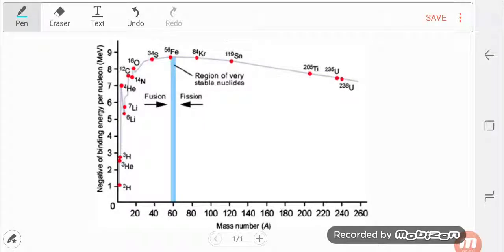Hello everyone, so in this video we are going to discuss binding energy per nucleon versus mass number graph. We have 9 points that we have to remember.